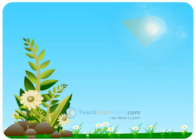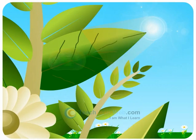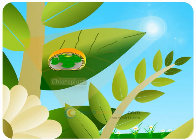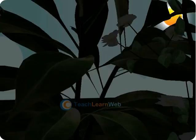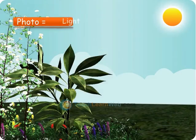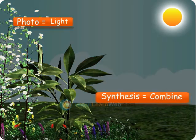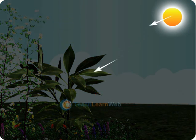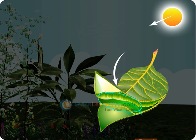Sunlight is captured by the chlorophyll pigment present in the leaves. It is a green color pigment present inside the chloroplast of the leaf. By photosynthesis — photo meaning light and synthesis meaning to combine — leaves capture the solar energy and store it in the form of food.